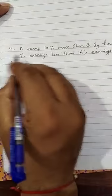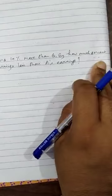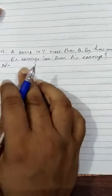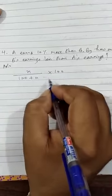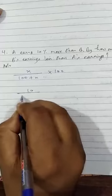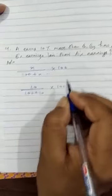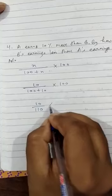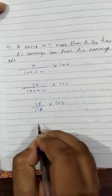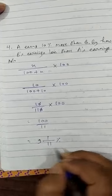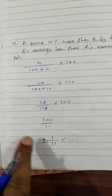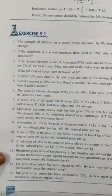Next question number 4: A earns 10% more than B. By how much percent is B's earning less than A's earning? Since A's earning is 10% more than B, there is a formula for finding this in terms of B's earning: X/(100 + X) × 100. We replace X by 10: 10/(100 + 10) × 100 = 100/11, which converts to the mixed fraction 9 and 1/11%.